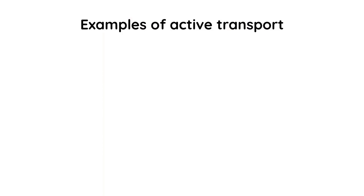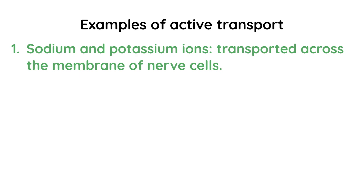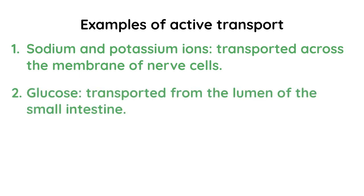There are several examples of active transport being used. One is the movement of sodium and potassium ions across the membrane of nerve cells, which is really important for nerve function. Another one is the movement of glucose from the lumen of the small intestine.